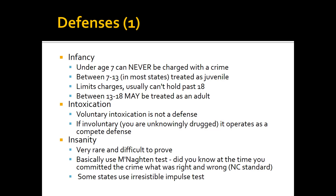Let's talk about a few criminal defenses. The first is age — the defense of infancy. Under the law, between birth and your seventh birthday you are called an infant and can never be charged with a crime, as you lack the capability to form criminal intent. In most states, between ages seven and thirteen you're a juvenile, not subject to the same penalties as adults, often sent to juvenile institutions with much lighter sentences. Between thirteen and eighteen, you may be a juvenile or, as in North Carolina, treated as an adult. Different states set different ages.